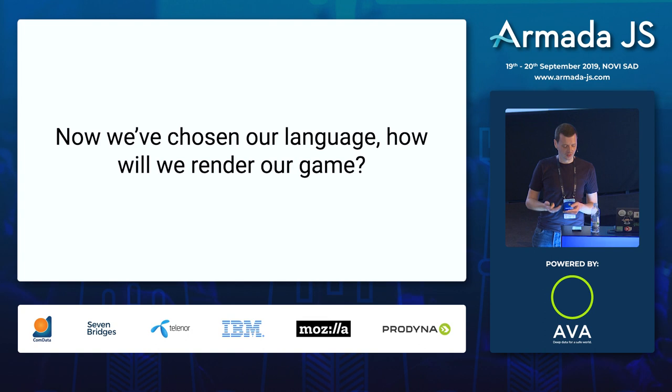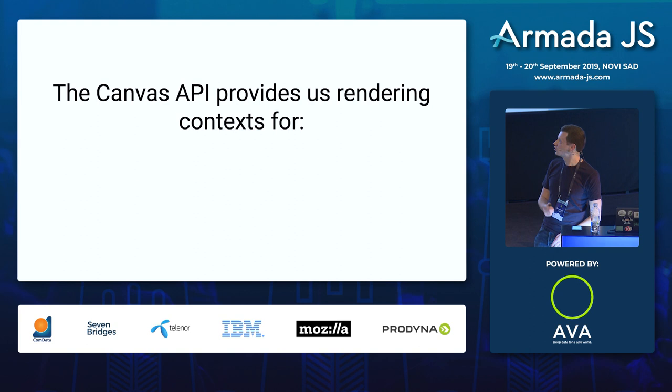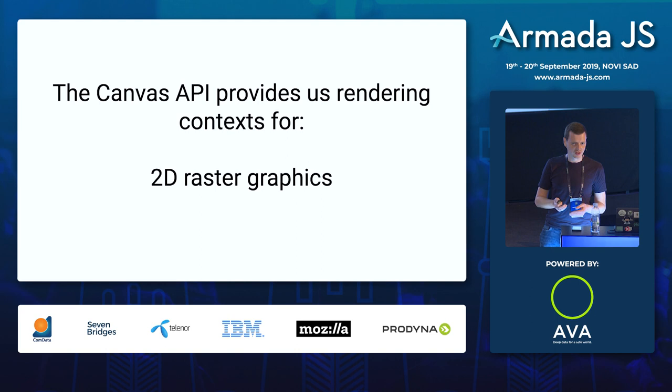Now we've chosen our language, how are we actually going to render our game? With the Canvas API, which provides us a rendering context for HTML 2D raster graphics, and WebGL for 3D stuff, but we're going to be looking at the 2D stuff today.